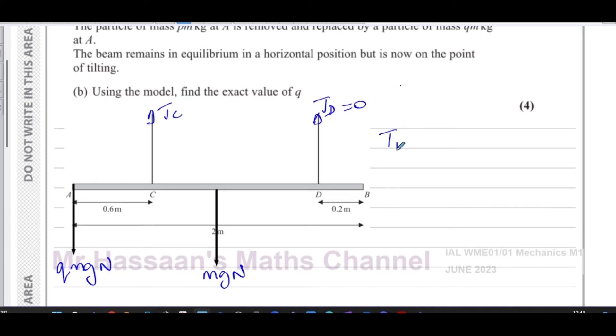It would lift off from D if this got any bigger, which means that if it's on the point of tilting, then the tension in the string at D must be equal to zero. So the tension at D is equal to zero. Why? Because it's on the point of tilting, and the tilting will only occur about C.